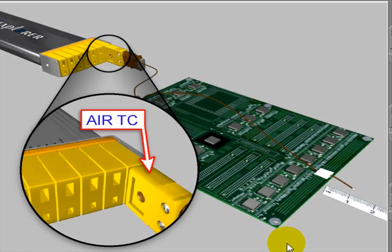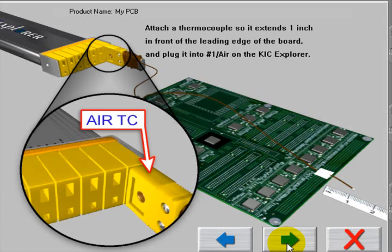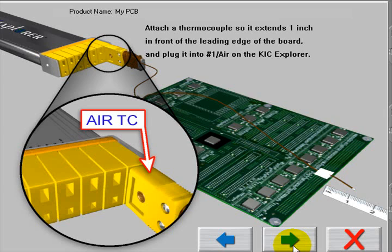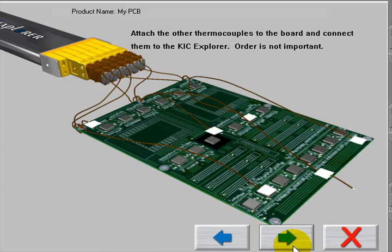You may remember, in Global Settings from Step 1, we had a trigger temperature specified as 31°C. This works in tandem with the Air TC on Channel 1 of your profiler. You can see the Air TC is mounted at the lead edge of the PCB to pick up the change from ambient temperature to oven temperature, which will automatically trigger your data run.